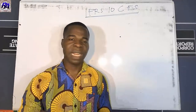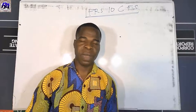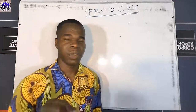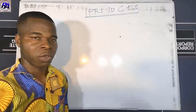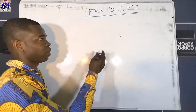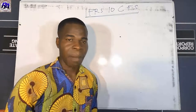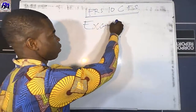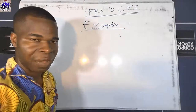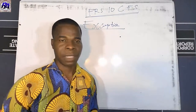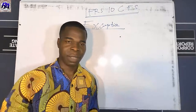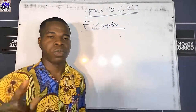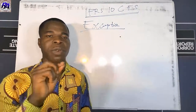Having established how control is obtained, an entity is required to prepare consolidated financial statements when it has obtained control. However, there are some exceptions where an entity may obtain control but will not be allowed to prepare consolidated financial statements.